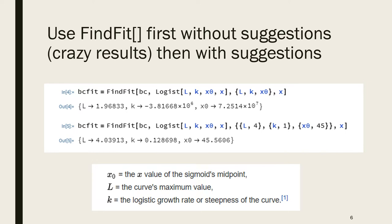We started off with bc fit equals FindFit with four arguments. The first one is the data BC. The second is the function we are fitting to - the logist function with parameters L, K, x₀ and variable X. The next argument identifies which quantities are serving as parameters: L, K, and x₀. The fourth argument is what quantity is serving as a variable, which is X. When we hit shift enter we get a set of values. There's no indication from Mathematica that it failed to converge, but K is negative times 10⁶ and x₀ is times 10⁷. These numbers just look a bit crazy.